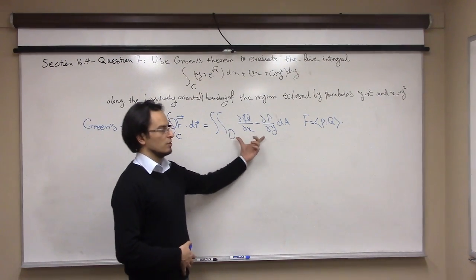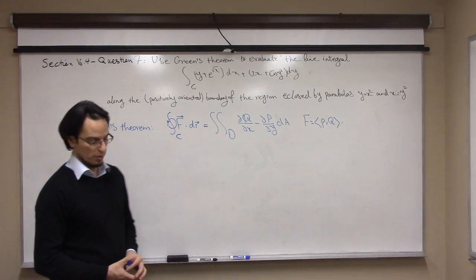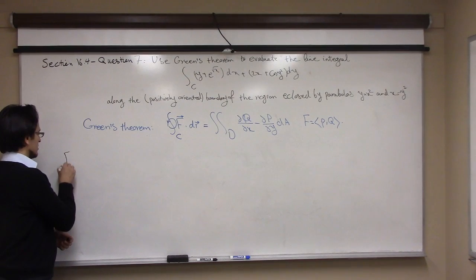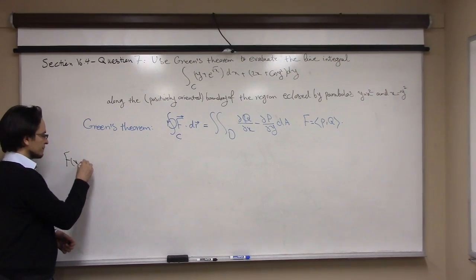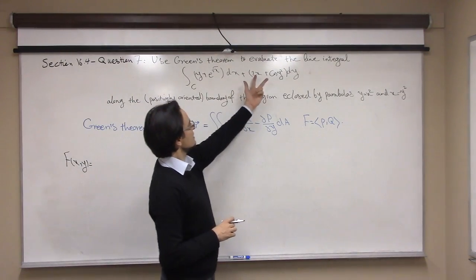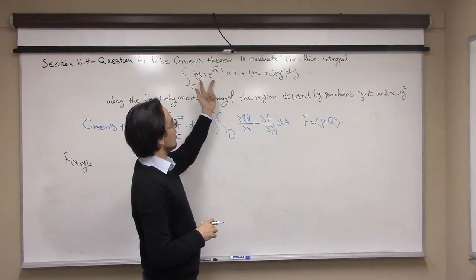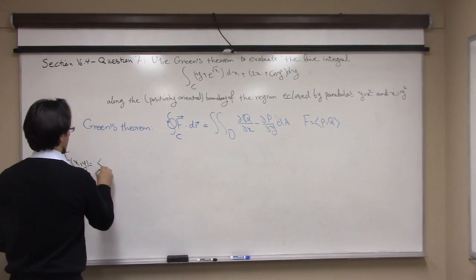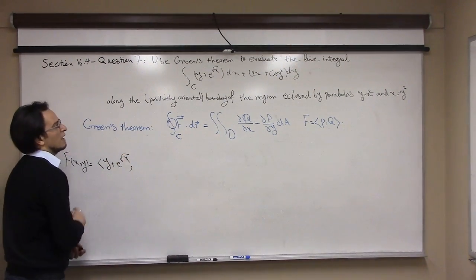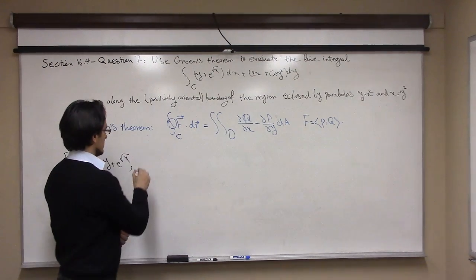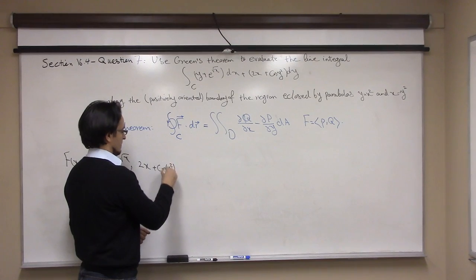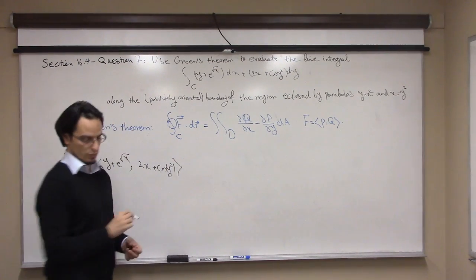So let's see what everything is in our case. The vector field is given in the integral — the coefficient of dx is P, which is the first component of the vector field, and the coefficient of dy is Q, the second component.